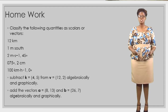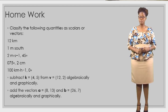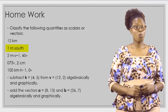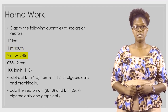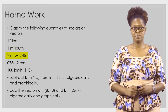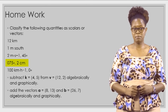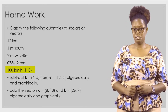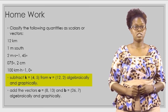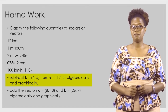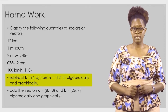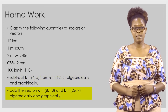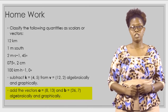For your homework, you are going to classify the following quantities as scalars or vectors: 12 km, 1 meter south, 2 meters per second, 45 degrees, 075 degrees, 2 centimeters, 100 km/h at 0 degrees. You will also subtract vector k (4, 5) from vector v (12, 2) algebraically and graphically, and lastly add vectors a (8, 13) and b (26, 7).